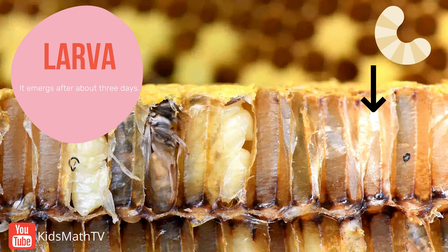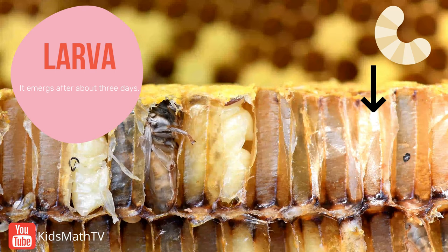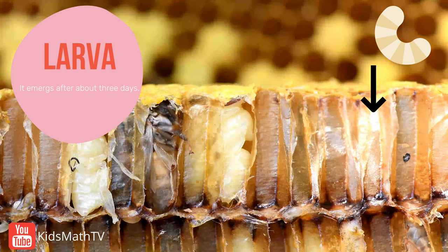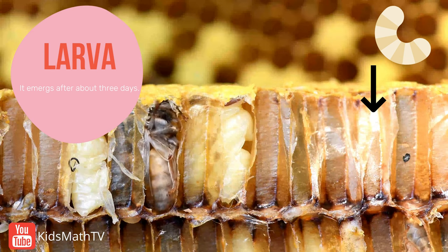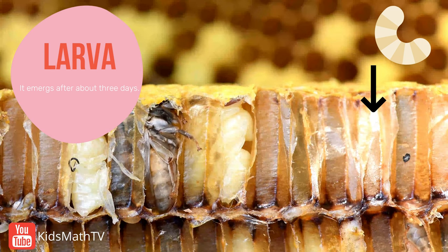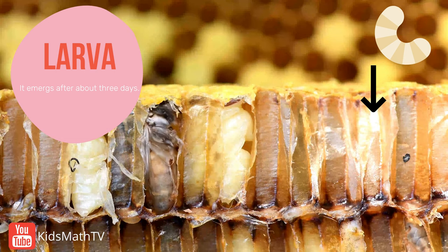The larva is a dormant stage since it has no legs and is blind. In this state, the larva will be fed by worker bees with jelly.